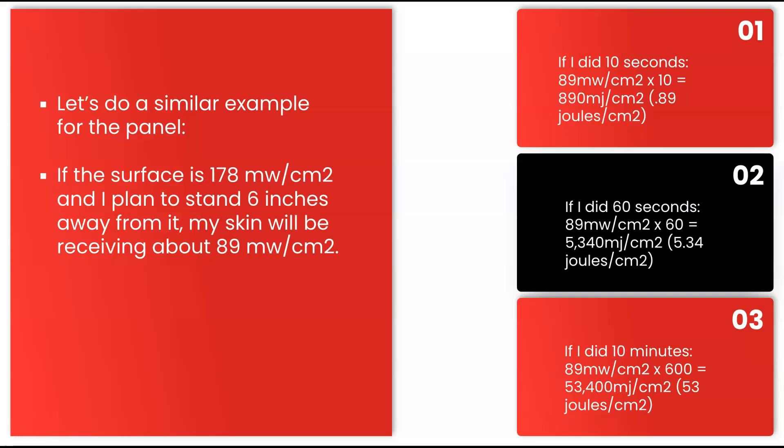These numbers should be given to you by the manufacturer. If the surface is 178 milliwatts per centimeter squared, and we plan to stand 6 inches away from it, our skin will be receiving about 89 milliwatts per centimeter squared. If we did 10 seconds, that would be 89 milliwatts per centimeter squared times 10 seconds, equaling 890 millijoules per centimeter squared. If we did 60 seconds, 89 milliwatts per centimeter squared times 60 seconds equals 5,340 millijoules per centimeter squared, or 5.34 joules per centimeter squared.